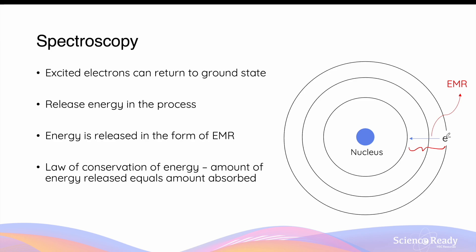So if the electron is going from the third orbit back down to its ground state in the first orbit, the amount of EMR it produces will be equal to the difference in the energy levels of these two orbits. By the law of conservation of energy, the amount of energy absorbed during the excitation process should be equal to the amount of energy released during the process through which the electrons return to the ground state.